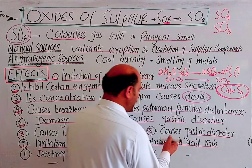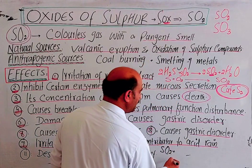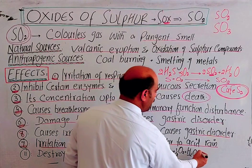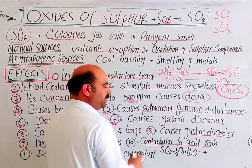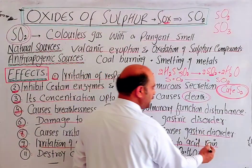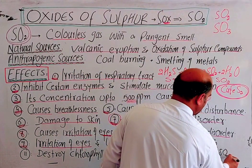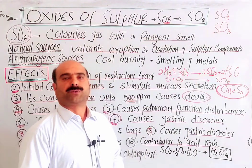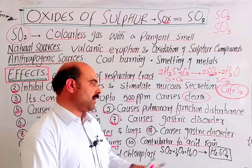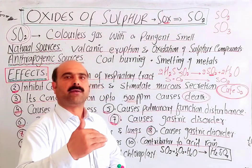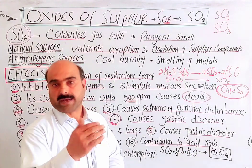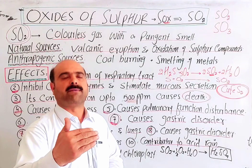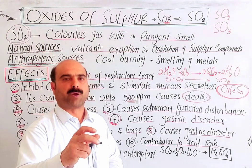Sulphur dioxide gas produced in the atmosphere reacts with oxygen and water vapors present in the atmosphere. The sulphur dioxide is oxidized and reacts with water to form H2SO4 — sulphuric acid. This is a strong acid. It causes rainwater to become acidic. The acid rainwater falls down and the pH drops below 7. When the pH is less than 5.6, this is called acid rain.